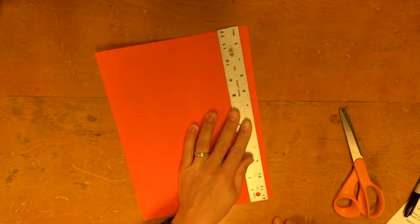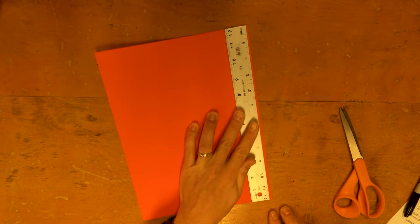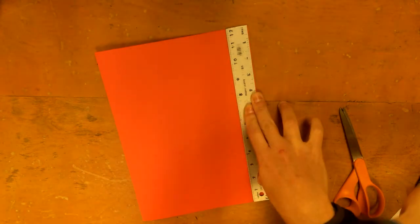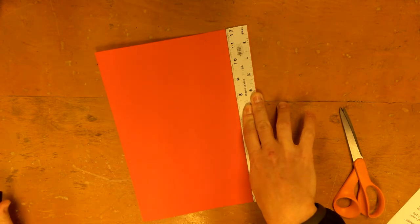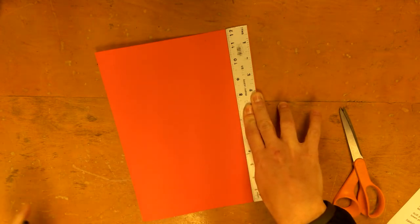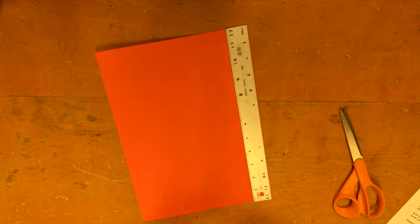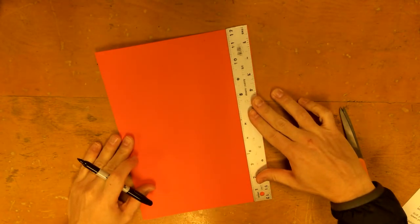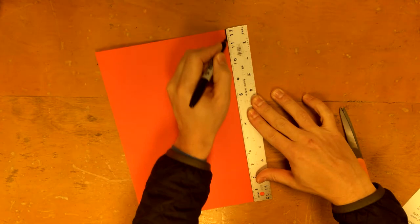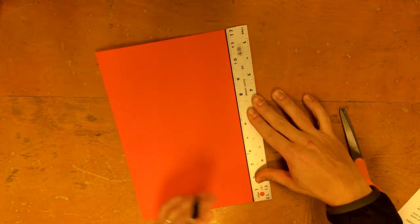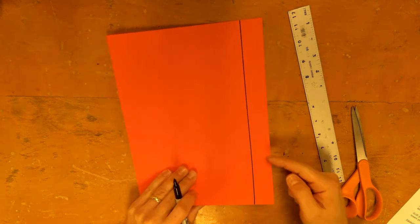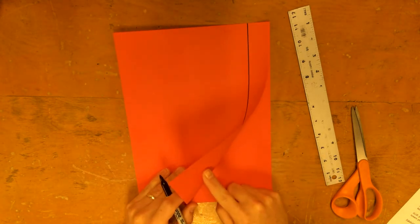Now that we're on the open side, I'm going to move my ruler up so that it matches the edge of the paper. Now we are going to grab our pencil and we're going to draw a line down.